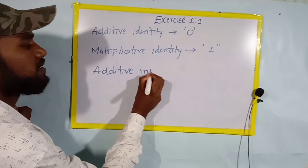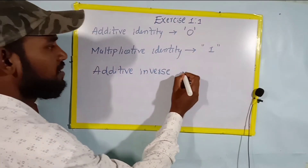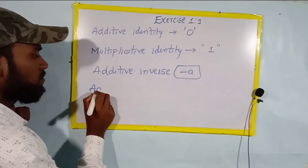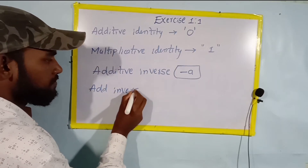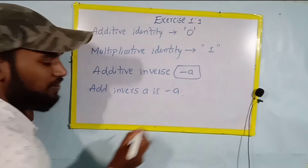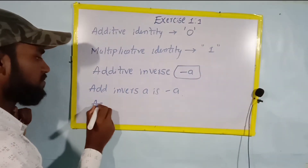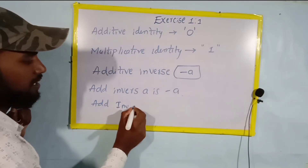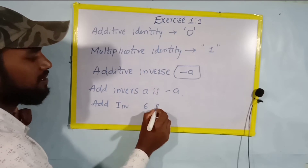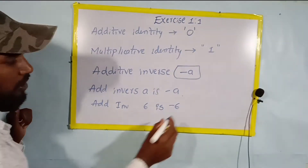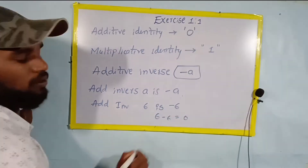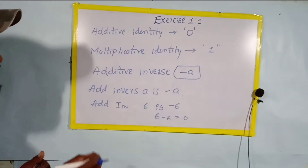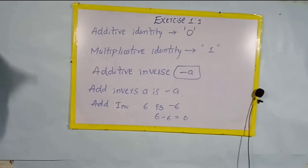Now, additive inverse. The additive inverse of a is minus a. For example, the additive inverse of 6 is minus 6. If we add 6 and minus 6, we get zero. So that is called the additive inverse — the additive inverse of a is minus a.